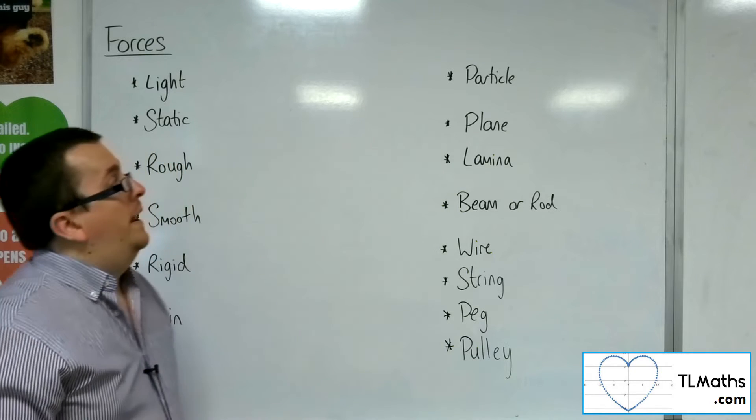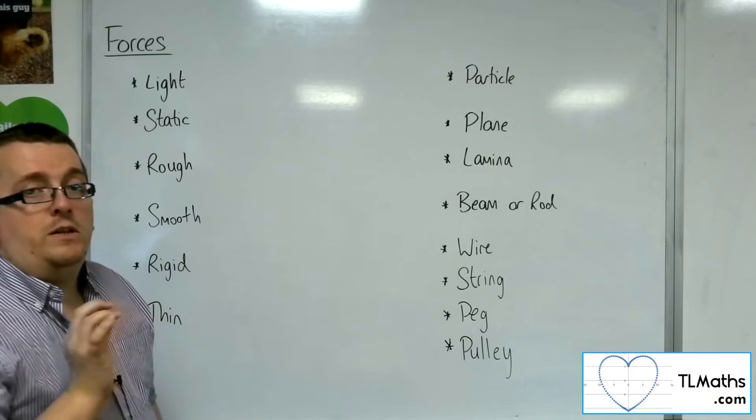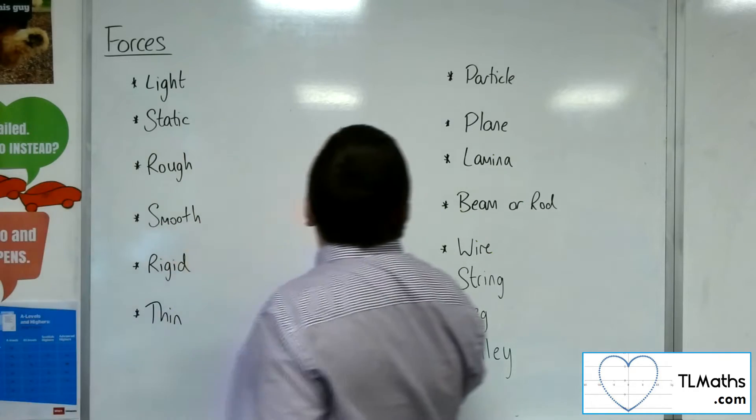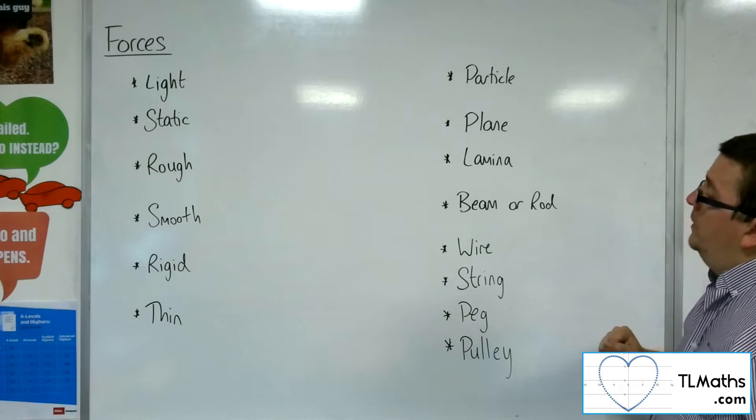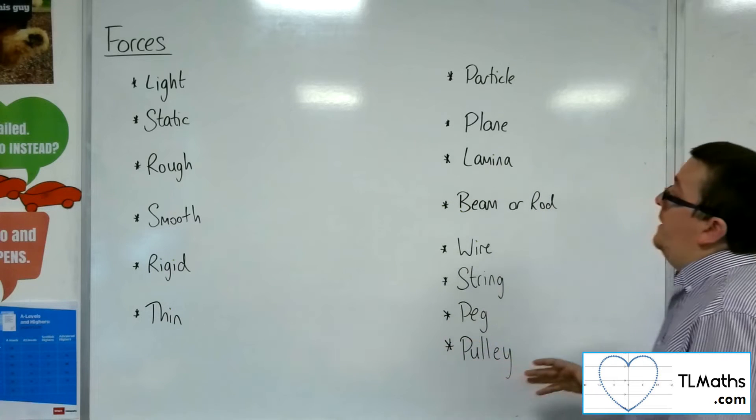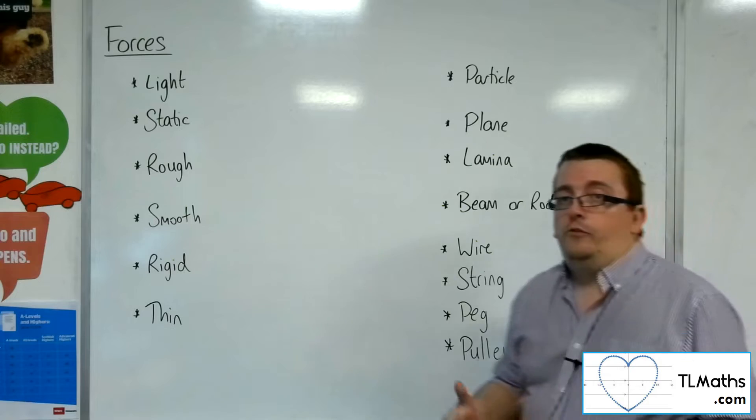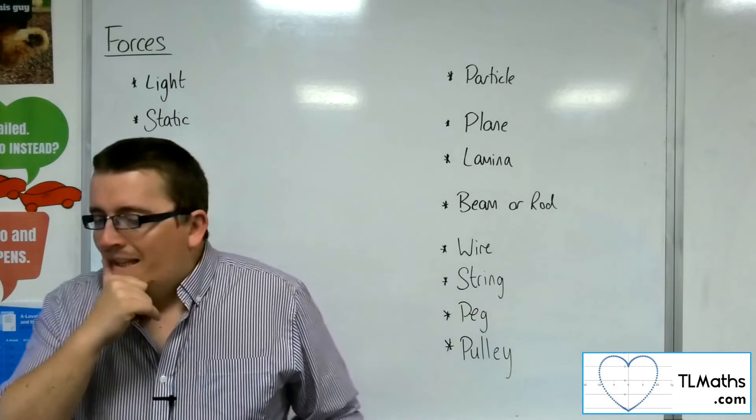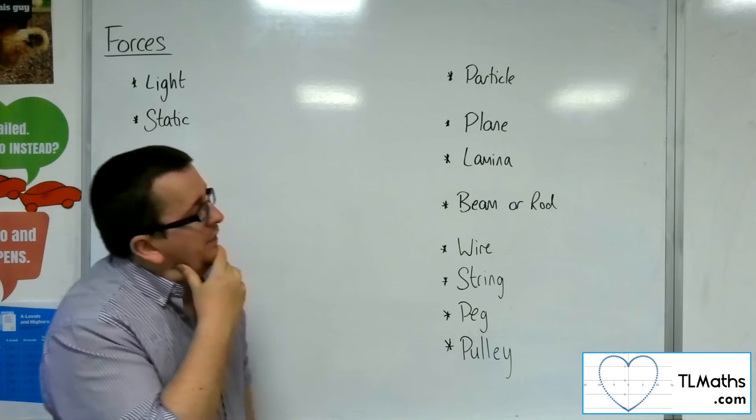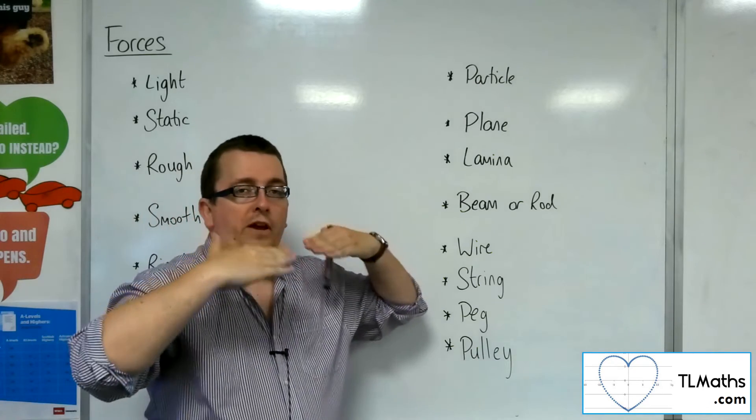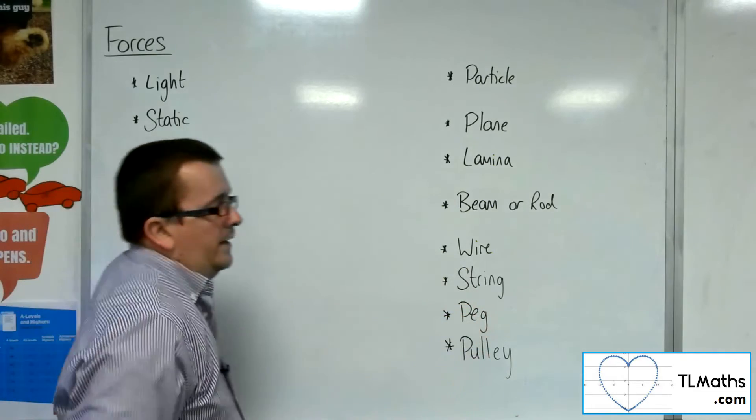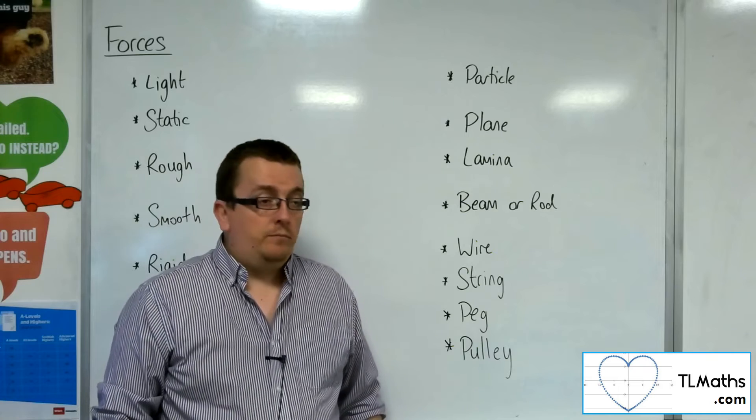So consequently, if it's a particle, I don't need to worry about its dimensions and what effect that will have. Now, a plane. A plane is just a flat surface. If you've done any kind of three-dimensional vectors, for example, especially if you've done some further maths, then you'll understand planes as surfaces in three dimensions, like the floor for example, or this wall, could be considered a plane. It's just a flat surface.